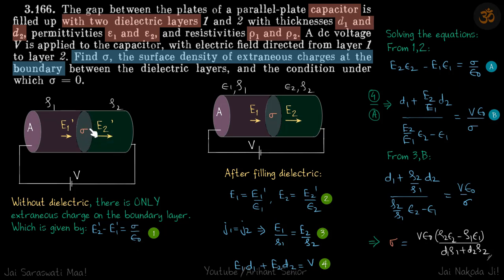This is the only way we can find the value of extraneous charge. This is without dielectric. Let us insert the dielectric now and let us say the final electric field is E1 and E2.